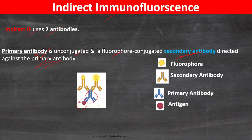Two secondary antibody molecules, conjugated with fluorophores, bind to the primary antibody, which in turn binds to the protein of interest. This is called indirect immunofluorescence because the fluorophore-conjugated secondary antibodies are not directly binding to the antigen — they bind to the primary antibody. Multiple secondary antibodies can bind to one primary antibody, resulting in amplification of the signal.